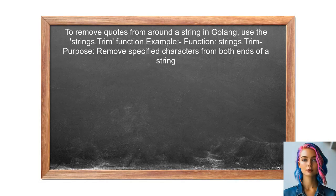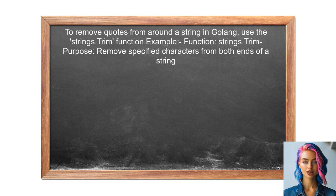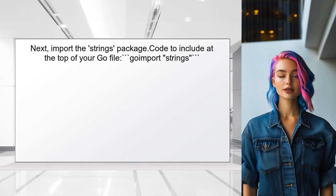To remove quotes from around a string in Golang, you can start by using the built-in function called strings.Trim. This function allows you to specify which characters to remove from both ends of the string. Next, import the strings package at the beginning of your Go file — this package contains the necessary functions for string manipulation.